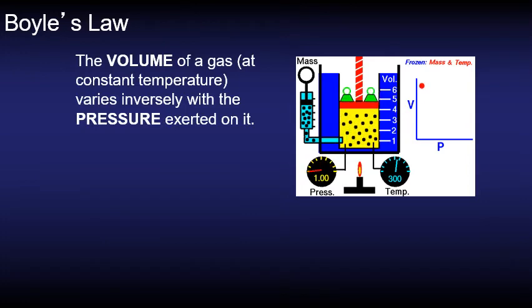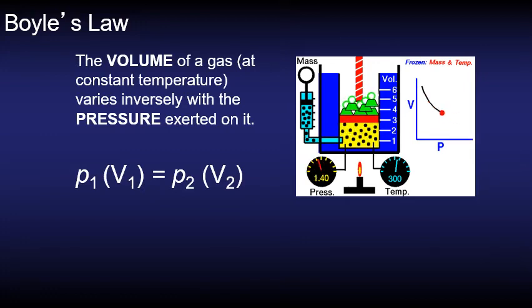All right our first perfect gas law, Boyle's law. Boyle's law is a law that specifically looks at the volume of a gas when it's at a constant temperature and how it varies inversely with the pressure. So we're just going to be focusing on volume and pressure. The formula that we'll use for Boyle's law is p1 V1 equals p2 V2.